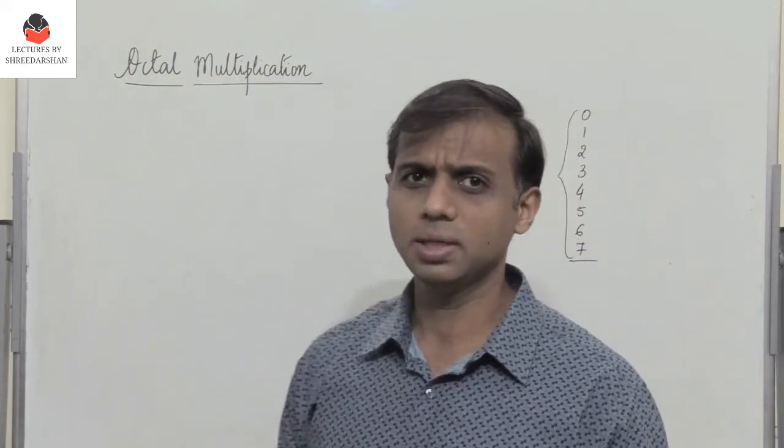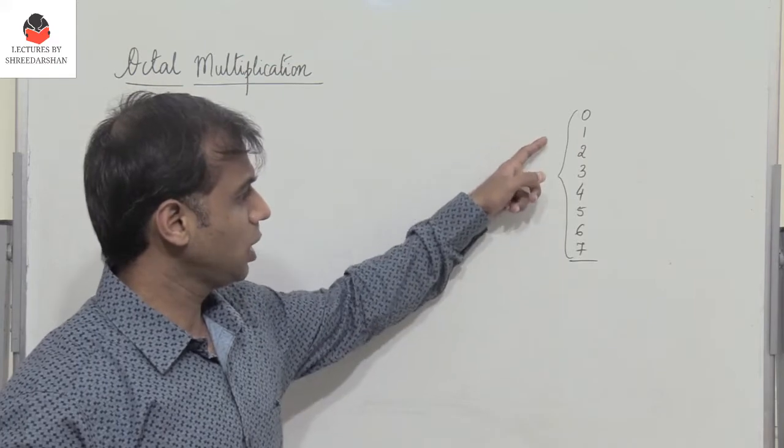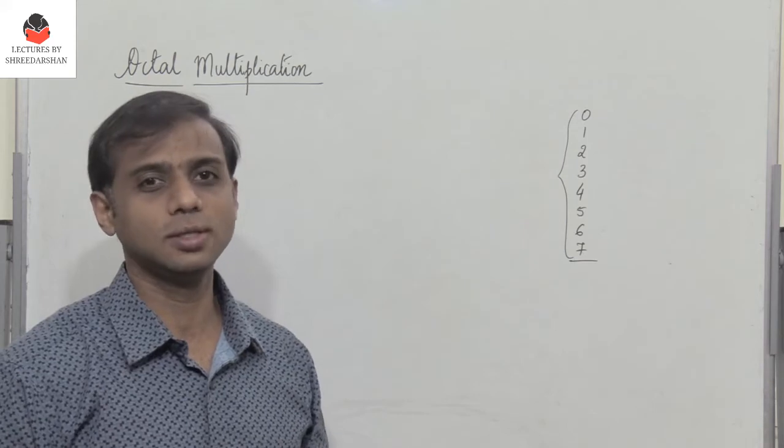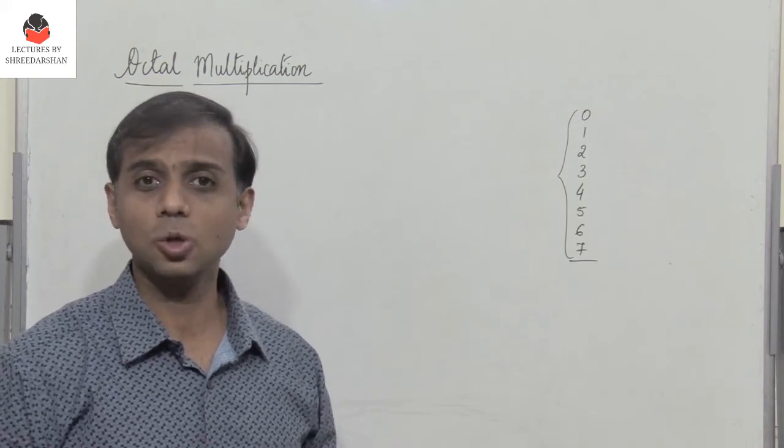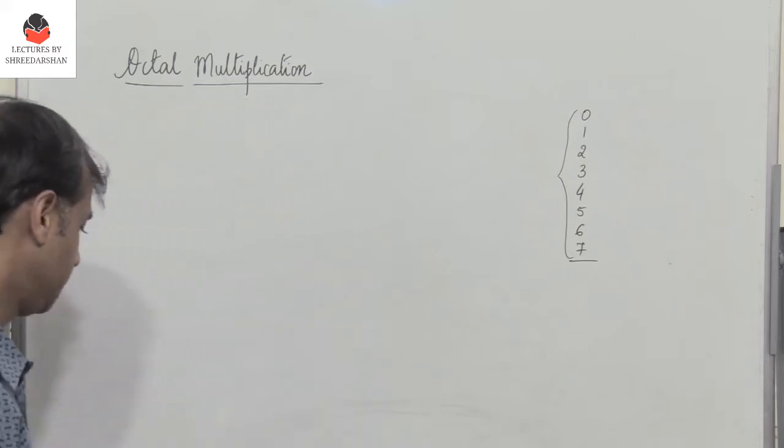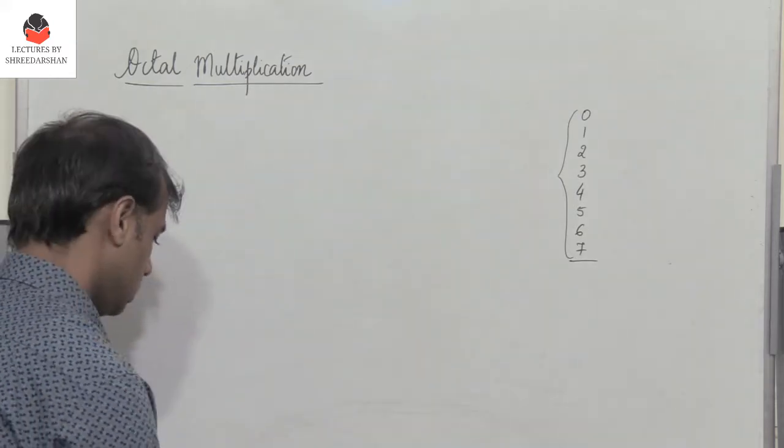Now you just have to remember that in octal representation, we have numbers 0 to 7. And if the number goes beyond 7, what do you do? You have to convert it to octal. How do you convert it to octal? By dividing it by 8. So let's take an example and let us see how we can perform octal multiplication.